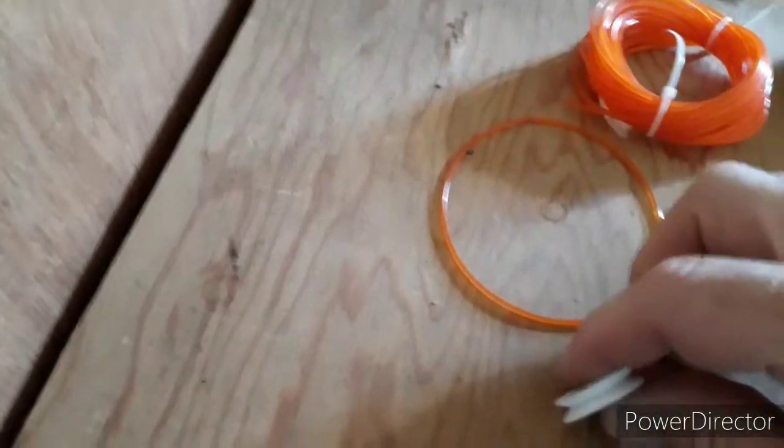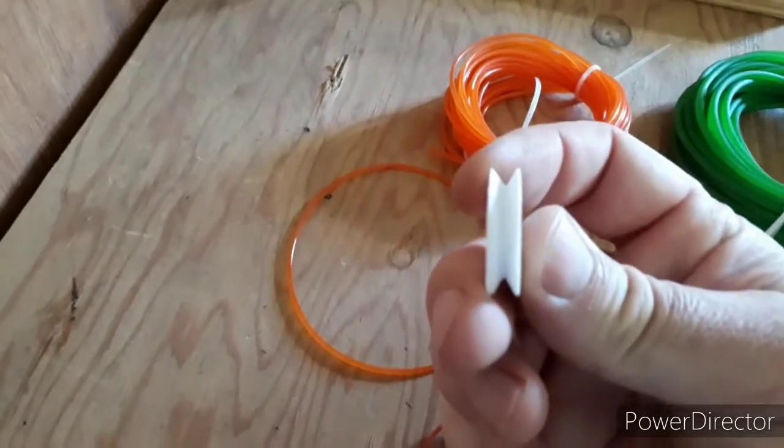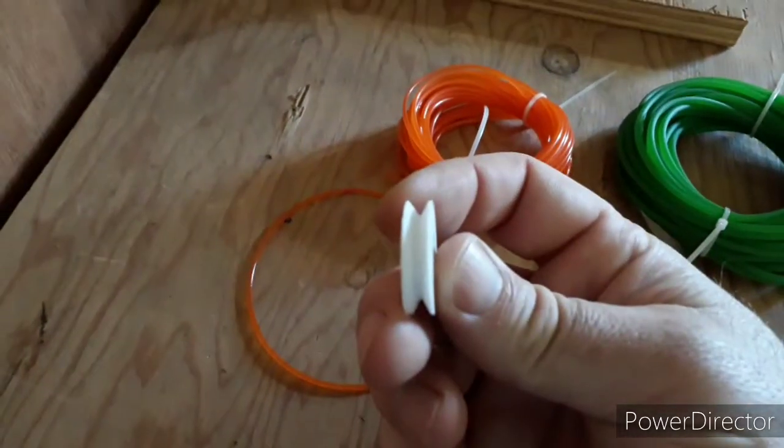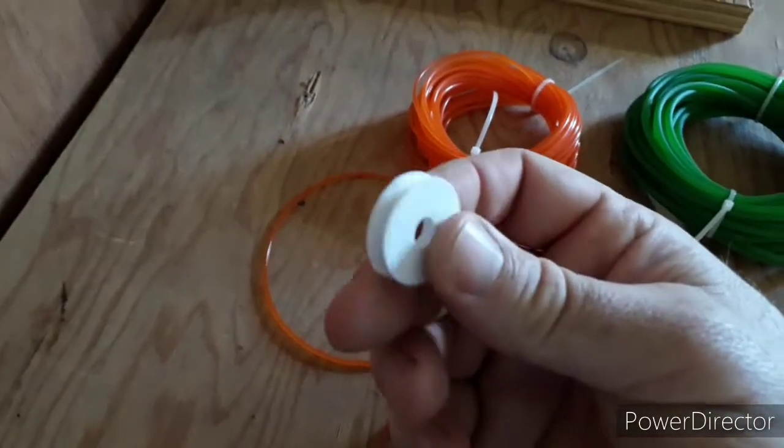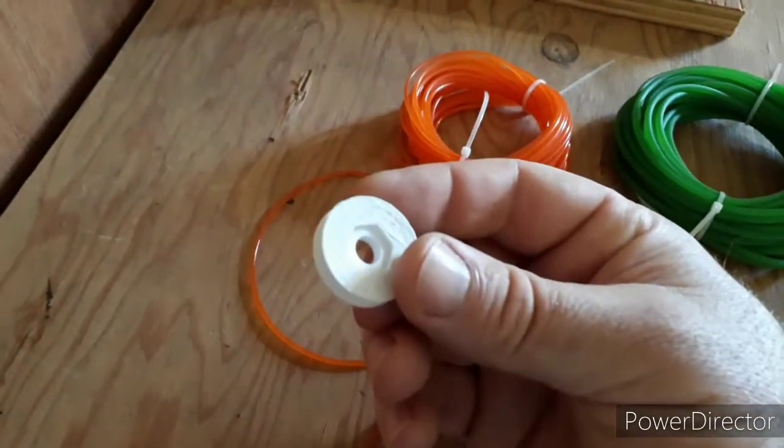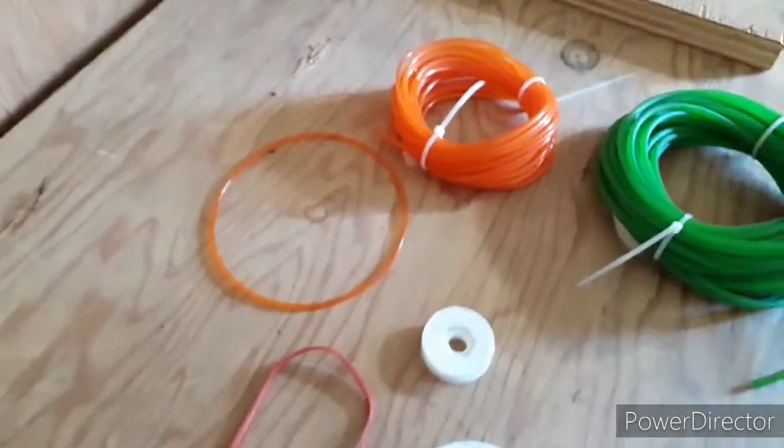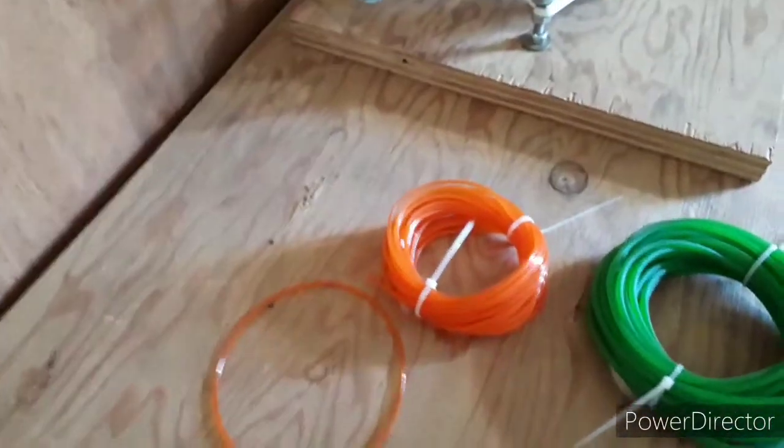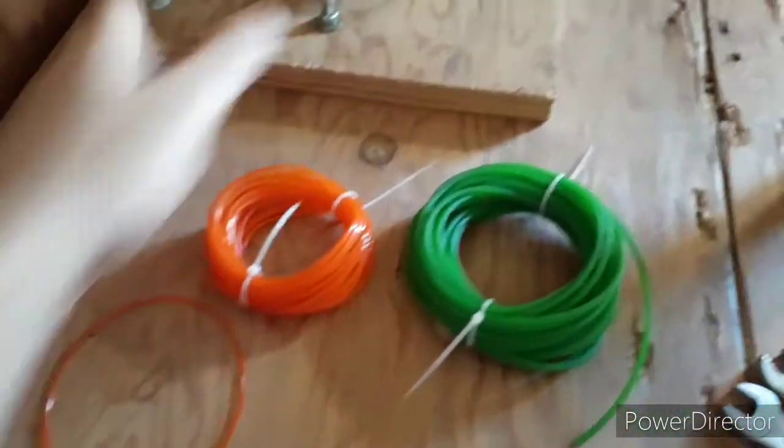So anyway, a v-pulley and this round belt seems like really great technology for makers. I don't really find a lot of information about it in makerspaces, but let me show you how I've used this.